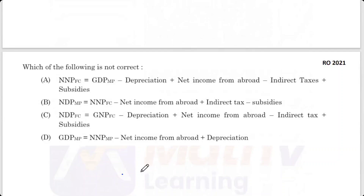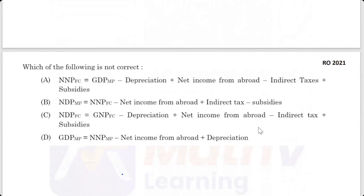The equations are: (A) NNP at factor cost equals GDP at market price minus depreciation plus net income from abroad minus indirect taxes plus subsidies. (B) NDP at market price equals NNP at factor cost minus net income from abroad plus indirect tax minus subsidies. (C) NDP at factor cost equals GNP at factor cost minus depreciation plus net income from abroad minus indirect tax plus subsidies.